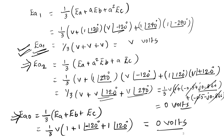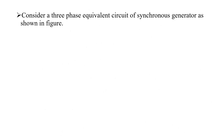So whenever we are drawing the networks for positive, negative, and zero sequence, the negative and zero sequence networks do not have any induced EMFs in the circuit. Now let us start with the positive, negative, and zero sequence components of the synchronous generator.